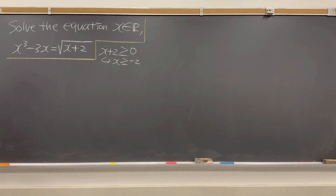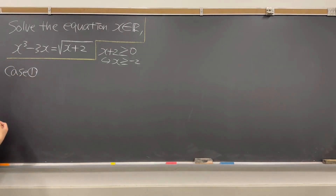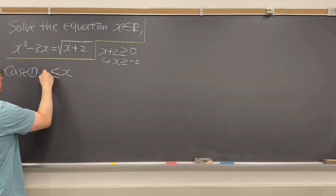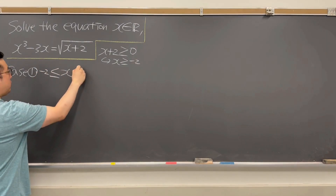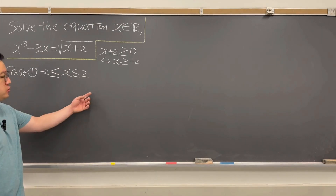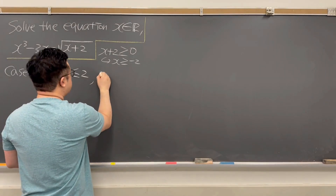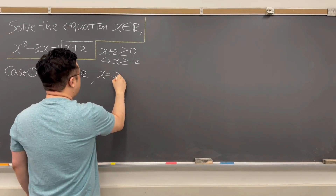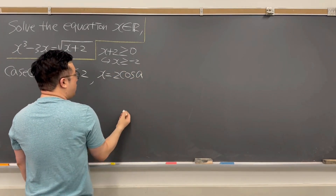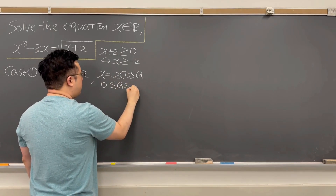So let's talk about case number 1. For case number 1, I'll assume that x should be between negative 2 and positive 2. In this case, we can make a trigonometric substitution. We can say x is going to be 2 times cosine of angle A, where angle A has to be between 0 and pi.